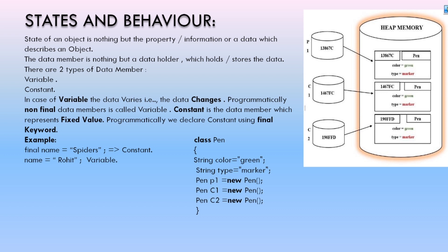Let us refresh the topic from the previous video — state and behavior. The state of an object is nothing but the property, information, or data which describes an object. Here you have variable and constant. In the video on data types and variables I have told you what a variable is. I'll be attaching the link of that video in the card.